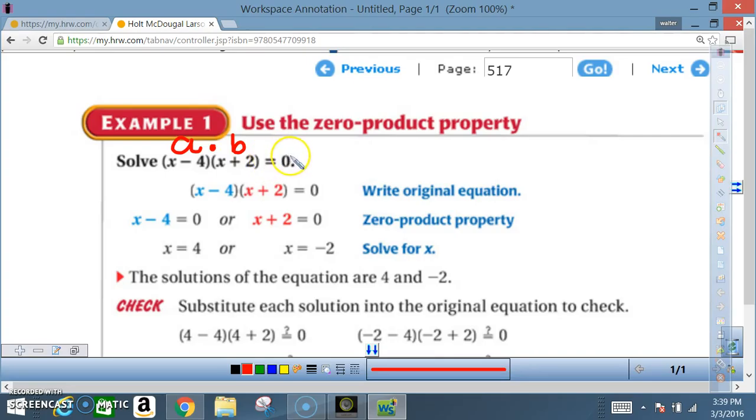Okay, to make sure you understand the property, all they're saying here is that the (x - 4), that's your a, the (x + 2), that's your b.